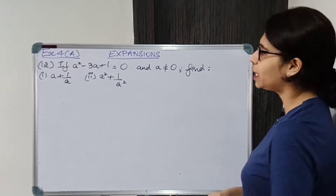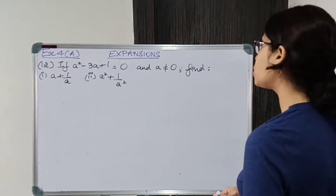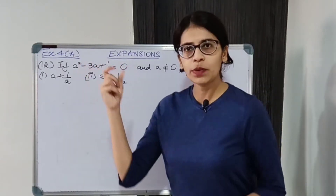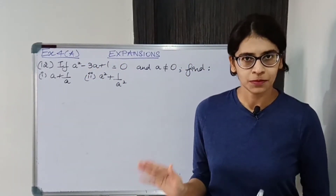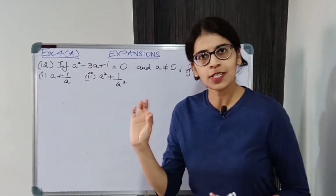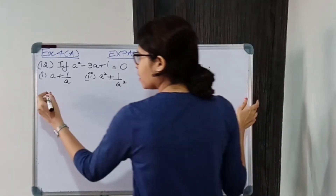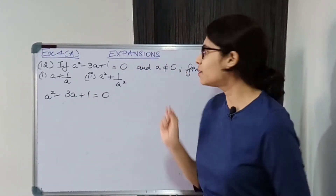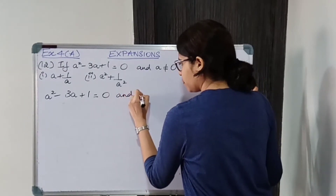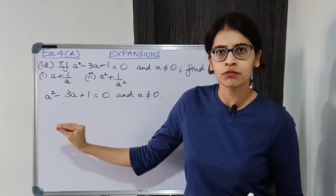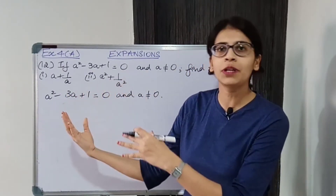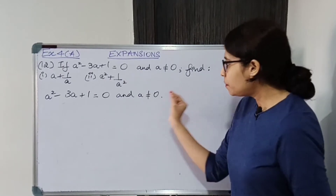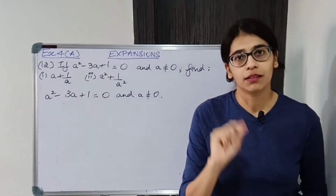Moving on to question number 12: if A square minus 3A plus 1 is equal to 0 and A is not equal to 0, find first part A plus 1 upon A, and second part A square plus 1 upon A square. Now you might think, what equation are we given? It's very easy. Write this down — first step, write the given equation: A square minus 3A plus 1 equals 0, and A is not equal to 0.